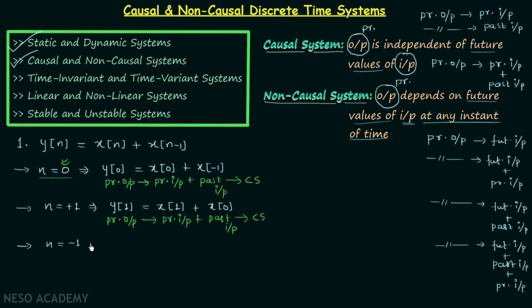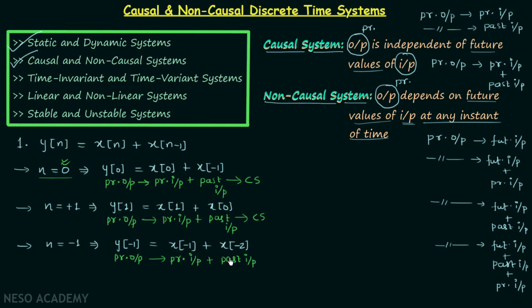Taking n = -1 gives y[-1] = x[-1] + x[-2]. Here y[-1] is the present output, x[-1] is the present input, and x[-2] is the past input. So again the present output is depending on the present input and the past input. Therefore we can conclude that the system y[n] = x[n] + x[n-1] is a causal system.